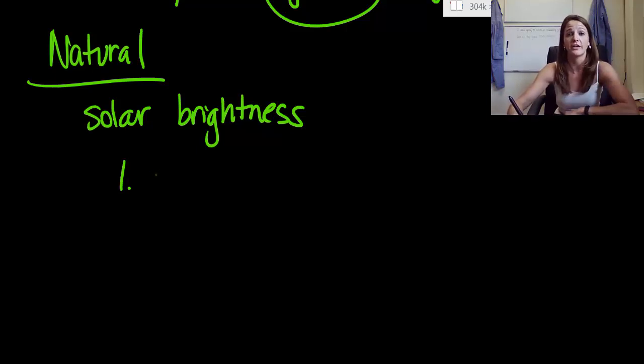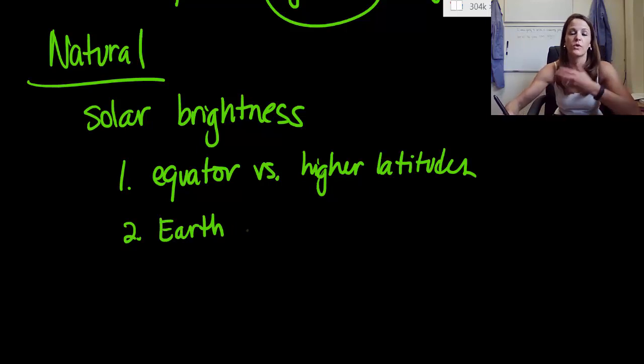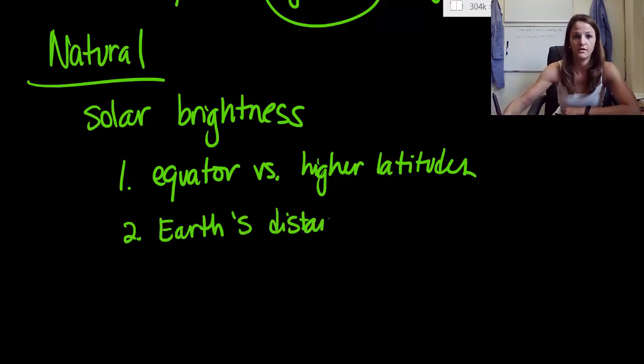There are four factors that come into play whenever we talk about our solar brightness. The first one is where are you actually on Earth? Are you near the equator? Or are you near higher latitudes? The second one is where is the Earth's distance? Or where is the Earth relative to the sun? So the Earth's distance from the sun. The third one is our Earth's axis, or the tilt.